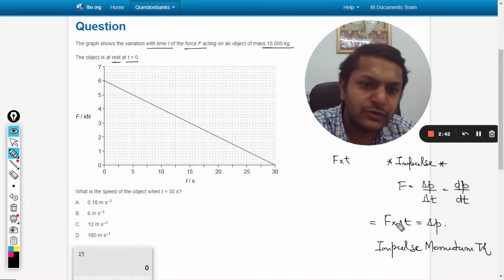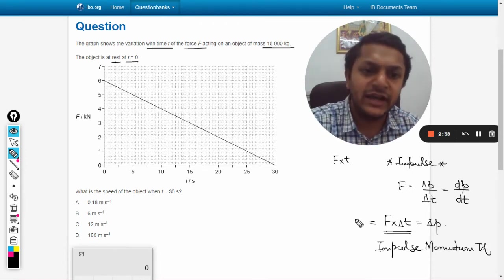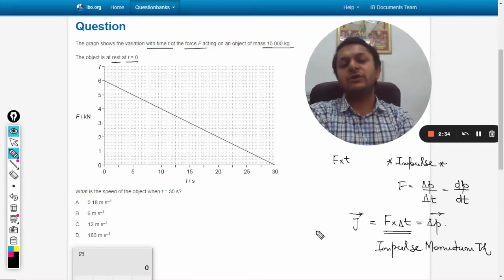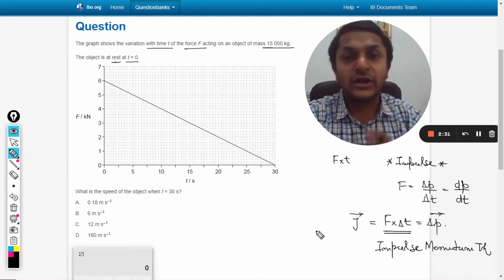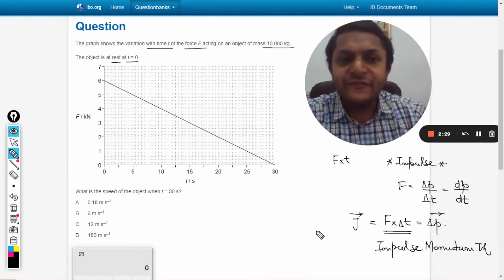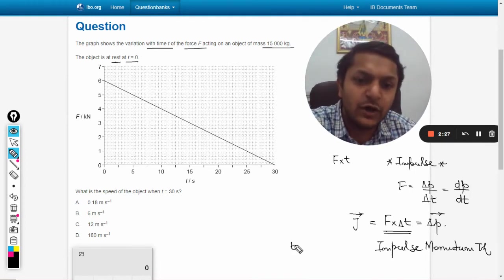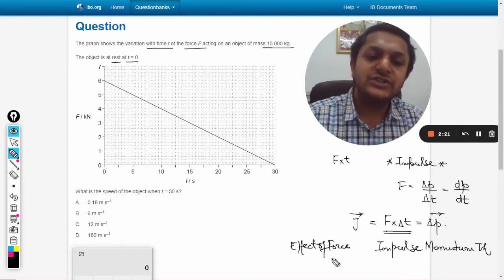This is known as impulse-momentum theorem, because this physical quantity, that is force multiplied by time, is impulse. Impulse is also a vector, momentum is also a vector. Point to be noted: impulse is not a force, but it is the effect of force. And what is the effect of force? Change in momentum.